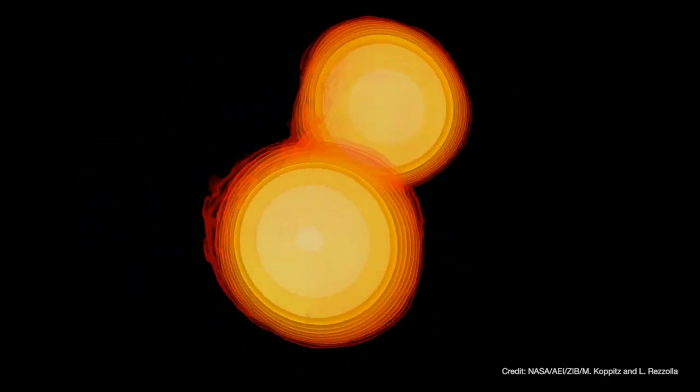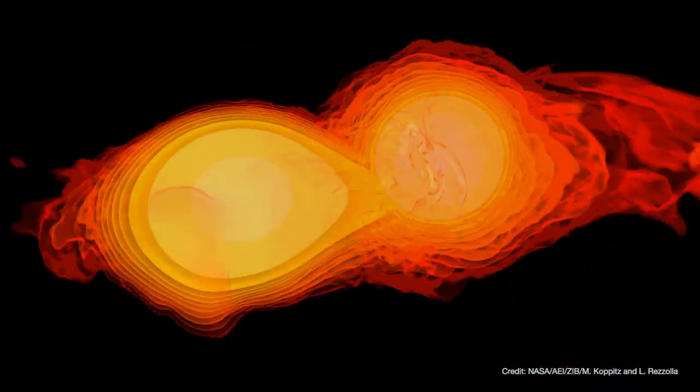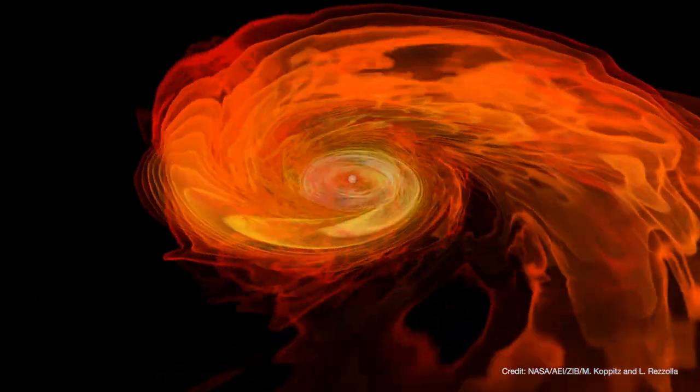This is one of the biggest discoveries in physics in the 21st century. We detected the collision of two neutron stars, and these two neutron stars spiraled in on one another. For about 70 seconds we saw this spiral in gravitational waves, and then they collided.